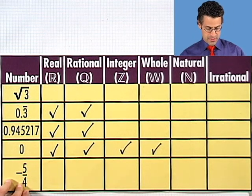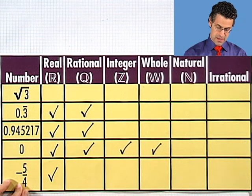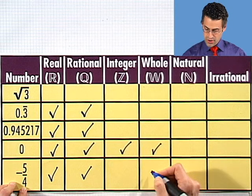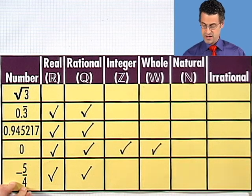Negative 5 fourths, what do we have here? It's a real number. It's rational because it's the quotient of two numbers. It's not an integer, not a whole number, not a natural number, not an irrational number.